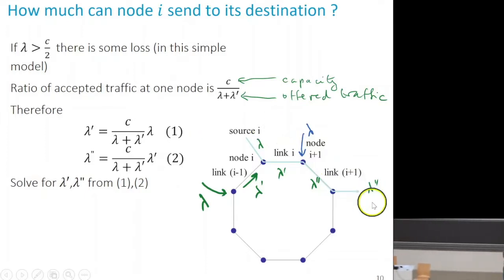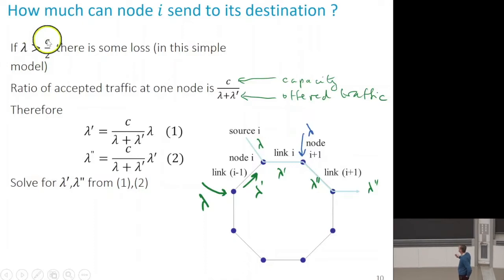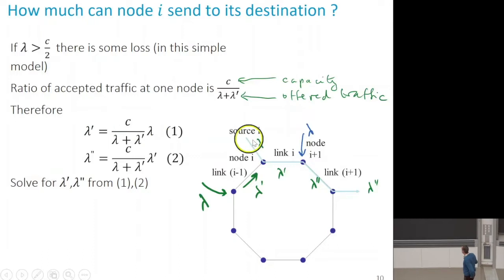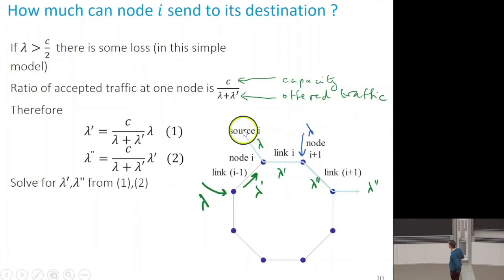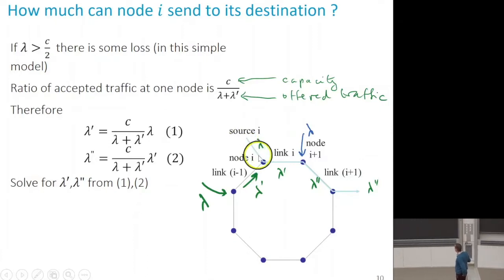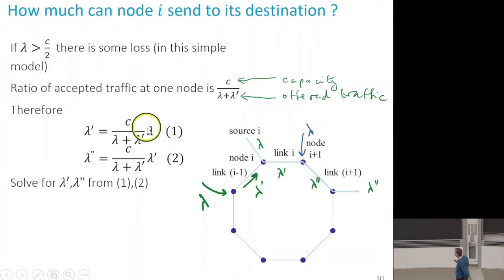We are analyzing the output value in the case where there is congestion, where lambda is larger than c over 2. We have two equations. The first equation explains what happens at the first hop for the flow. The offered traffic is lambda. The ratio between capacity and offered traffic gives us that, with fair mixing of packets, the output lambda prime equals the ratio multiplied by the input.